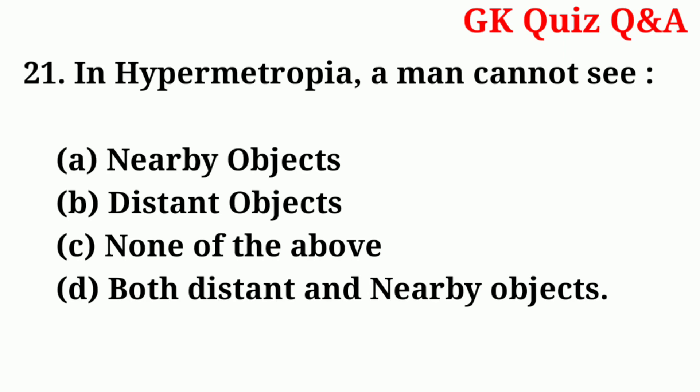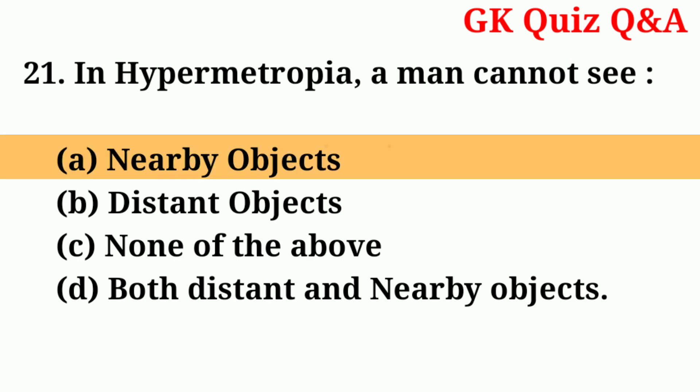Number twenty-one: in hypermetropia, a man cannot see — answer: number A — nearby objects.